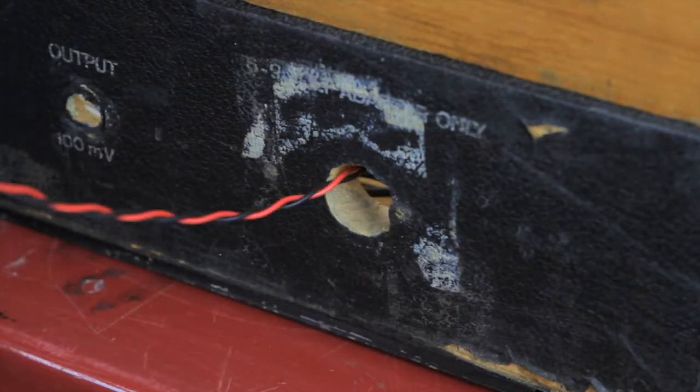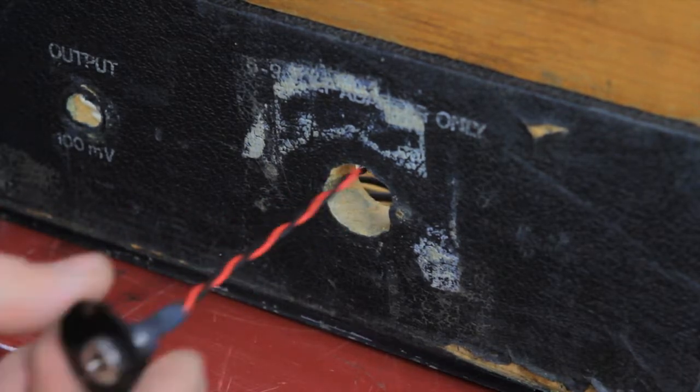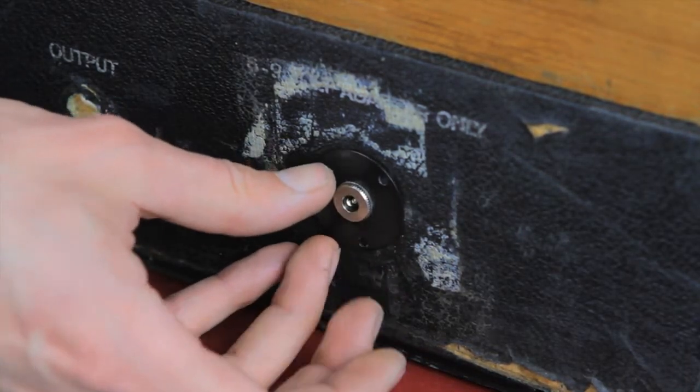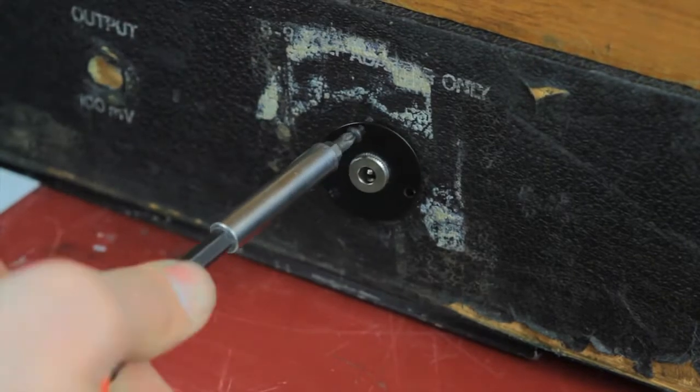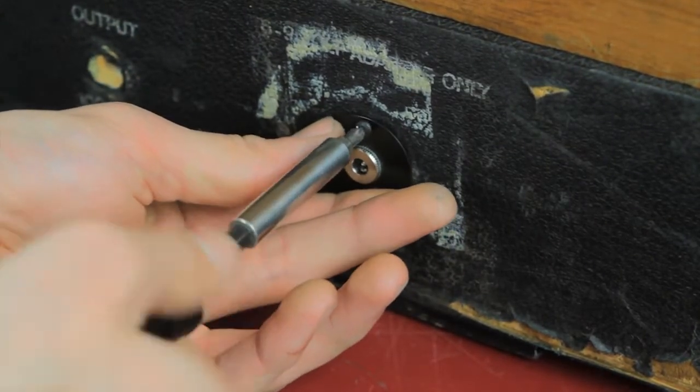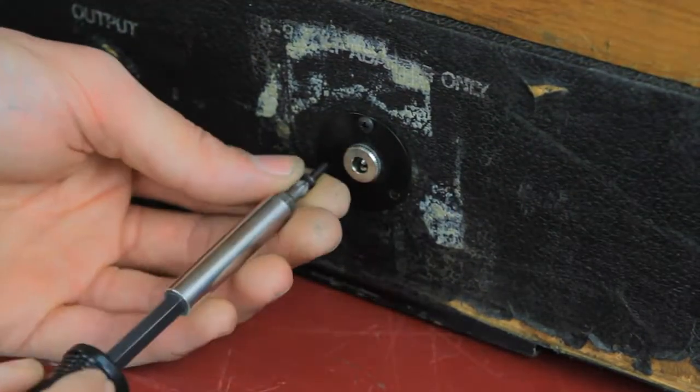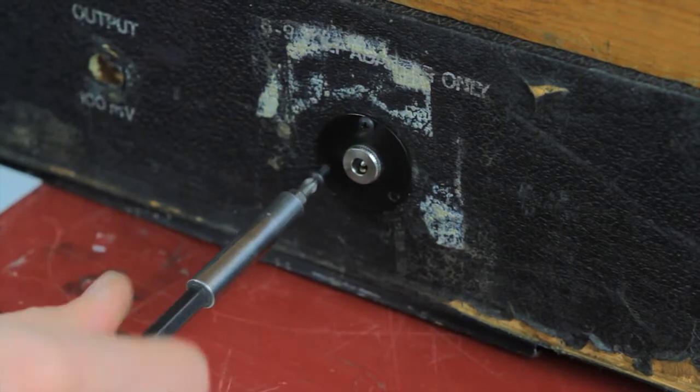Now we'll install the new DC jack. Slide the wires into the base. Center the jack plate in the open and install the three mounting screws. It might help to pre-drill these holes, but in most cases it isn't necessary.